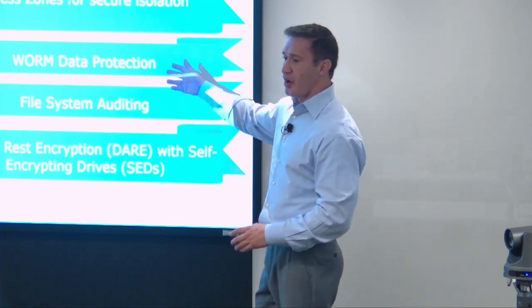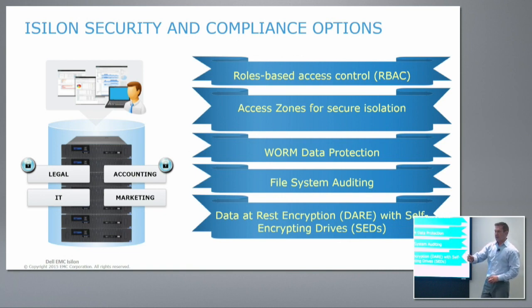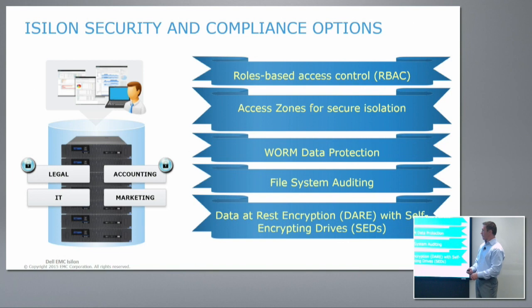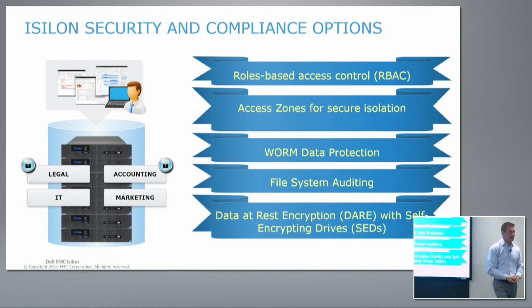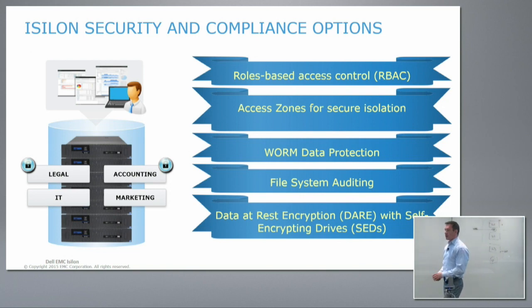WORM data protection — we've talked about that. We have everything from setting a directory as a WORM directory and then locking files manually, to an auto-commit feature which says that once a file has gone into a directory, after a specific amount of time when it's quieted down, we'll automatically lock it. Data comes in, the file closes, and it's locked and protected. File system auditing is done primarily through an external server called CEE — Common Event Enabler. All file system operations are logged to CEE, and CEE provides connectors for a number of different audit tools and third-party audit tools in the industry. For example, if you're a Varonis or Symantec customer, you can plug into CEE and consume those logs for reporting who is doing what within the cluster.